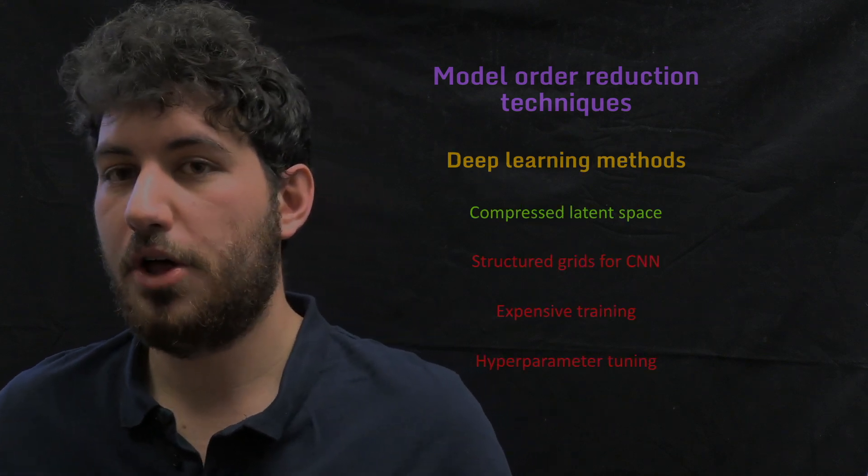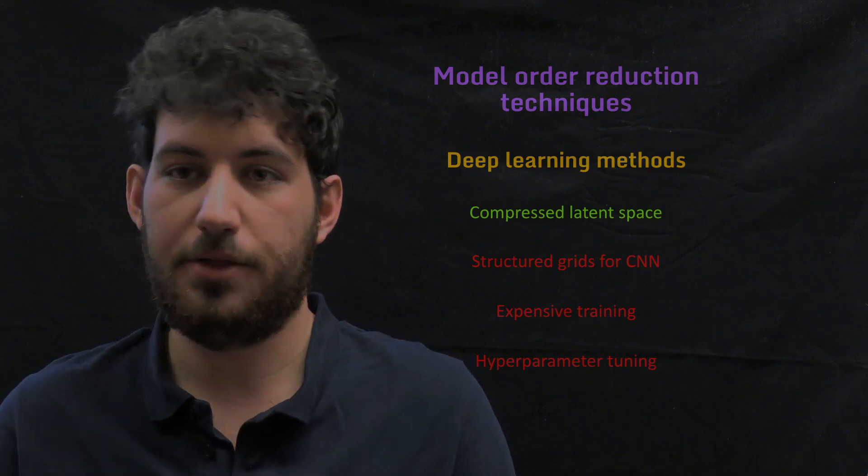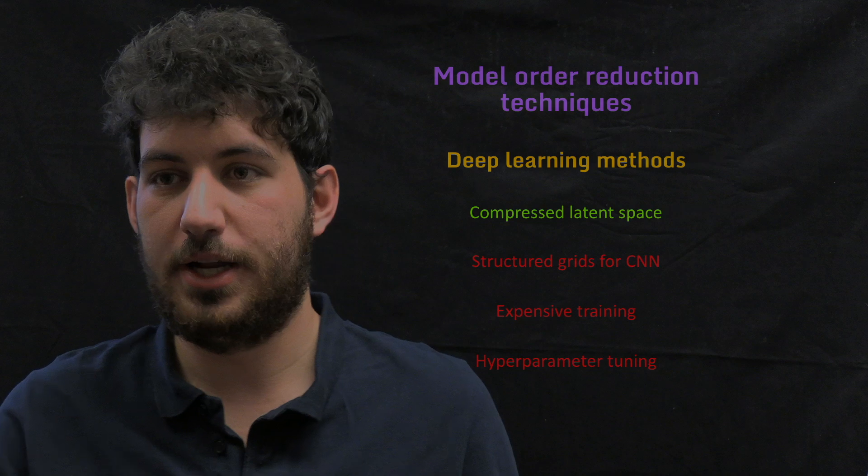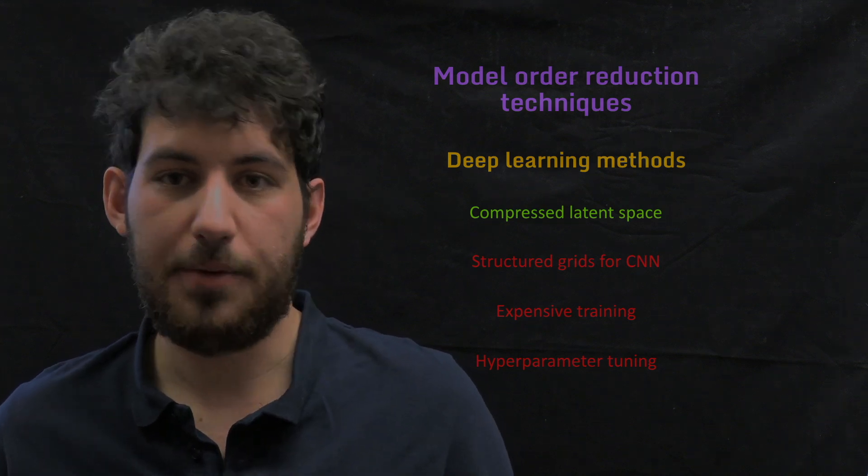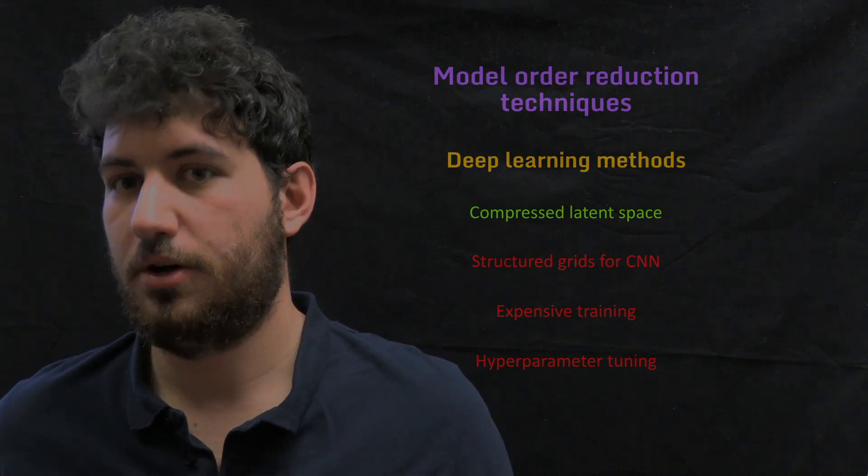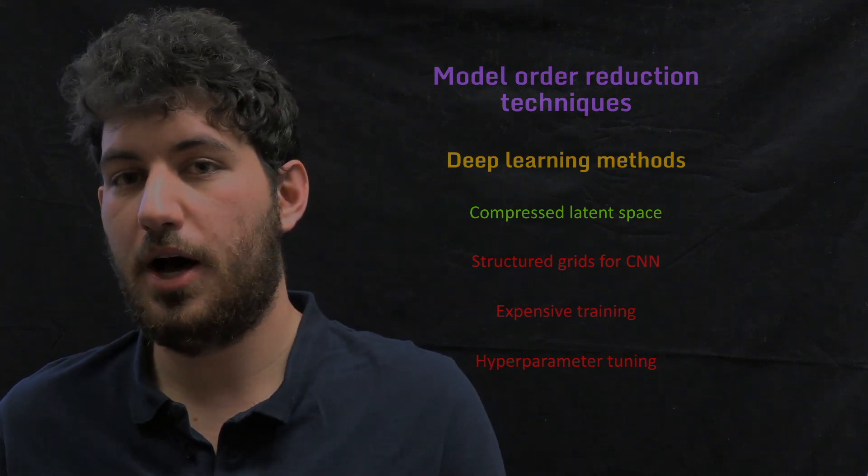Then we could go to the other type of methods that has been growing a lot recently, which are deep learning methods. They are really good at finding a compressed latent space. So instead of 1600 modes, we would be having something around the order of tens of modes. This would give us a really efficient dimensionality reduction.